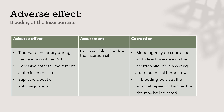The second adverse effect is bleeding at the site of insertion, which can occur due to trauma to the artery during balloon insertion, excessive catheter movement at the insertion site, or supratherapeutic anticoagulation. Assessment is through observation of excessive bleeding from the insertion site — the transparent dressing allows monitoring of bleeding. Correction involves controlling bleeding by applying direct pressure on the insertion site while ensuring adequate distal blood flow. If bleeding persists, surgical repair of the insertion site may be indicated.